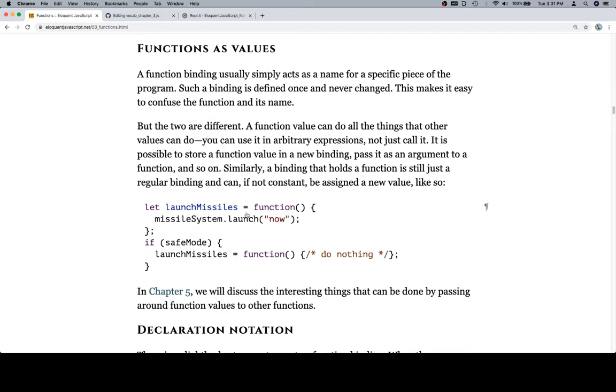Like so, let launchMissiles be a function. missileSystem.launch('now'). Well, I wish they wouldn't do stuff like that, but that's okay.